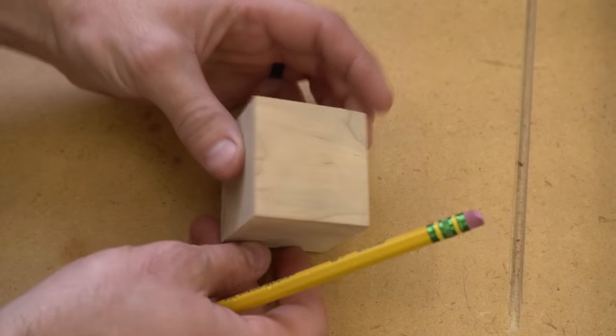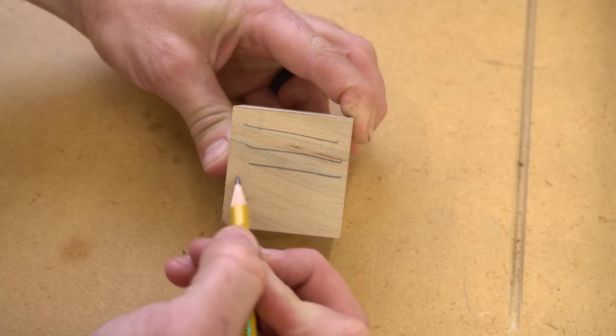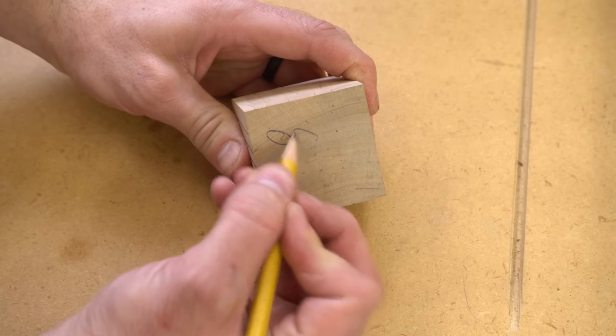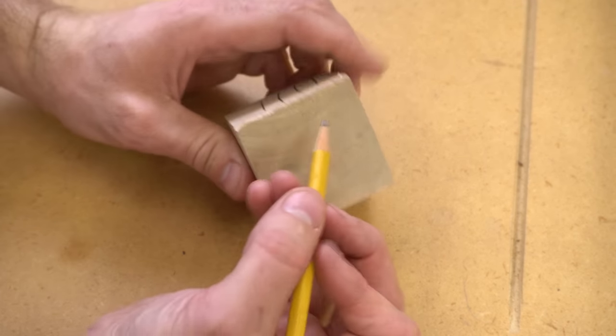While those blanks are setting up, let's take a look at why turning end grain presents us with some complications. I've got this small square of maple and I drew out the grain orientation on it, lines representing the direction of the grain from the edge, and circles indicating the end grain.